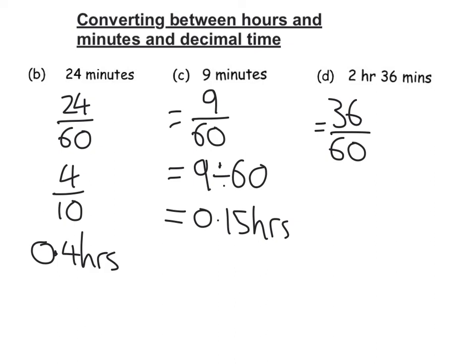Divide top and bottom by 6 again, then you're going to get 6 over 10. So 36 minutes is 6 over 10, or 0.6. So 2 hours and 36 minutes is 2 hours and 0.6, so that is 2.6 hours.